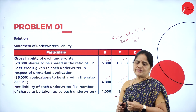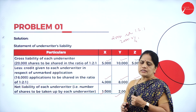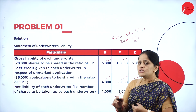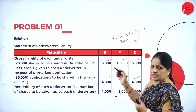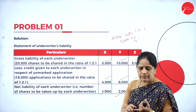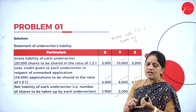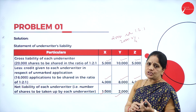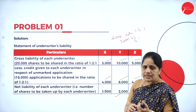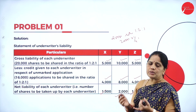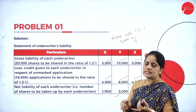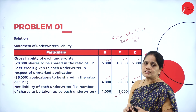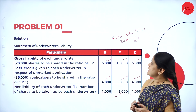Whenever we are given a problem on calculation of net liability, from the gross liability we have to deduct the unmarked application. From the balance, again you have to deduct the marked application. And if there is any surplus, it has to be shared between the underwriters. Whatever is the balance becomes the net liability of the underwriters.